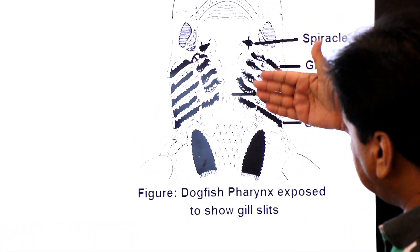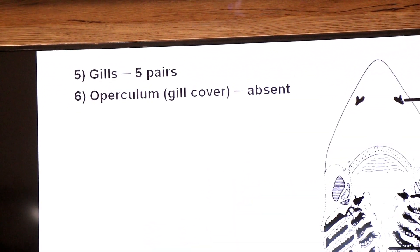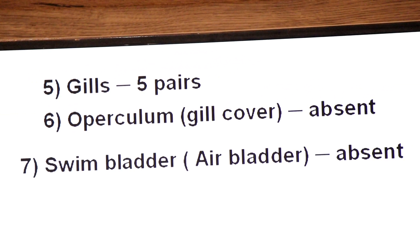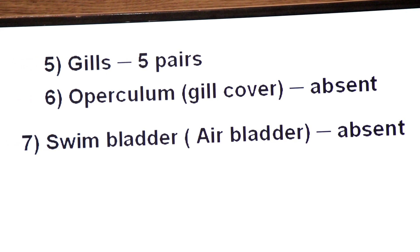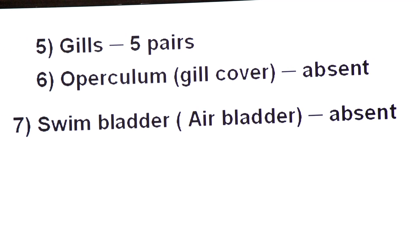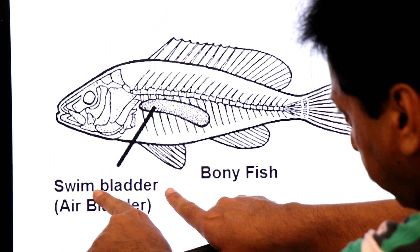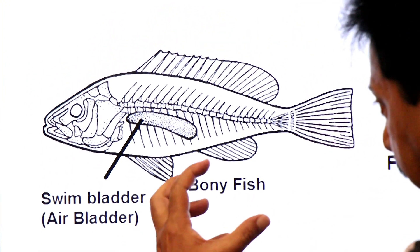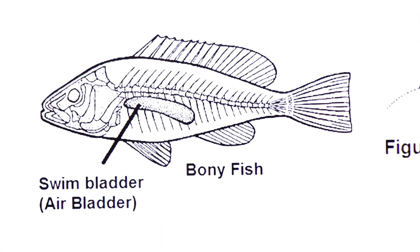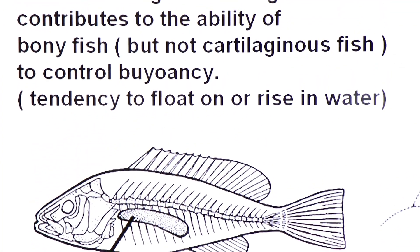In cartilage fishes, the gill slits have no covering — the operculum (gill cover) is absent. Also, the swim bladder (air bladder) is absent in cartilage fishes. This is a gas-filled internal organ found in bony fishes that contributes to their ability to control buoyancy — the tendency to float or rise in water. The swim bladder is only present in bony fishes; it is absent in cartilaginous fishes.